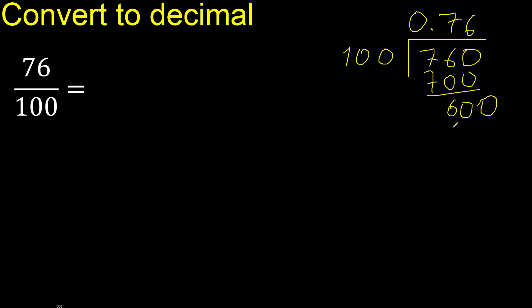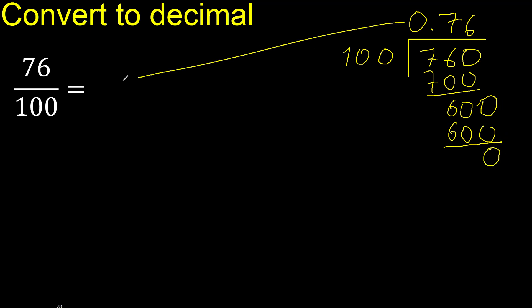100 multiplied by 6 is 600. 600 is not greater. Subtract: 600 minus 600 is 0. Therefore finish.